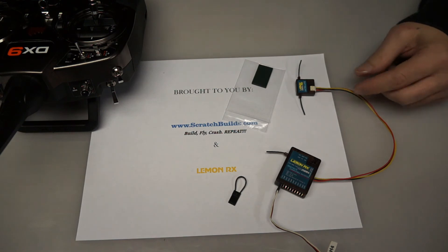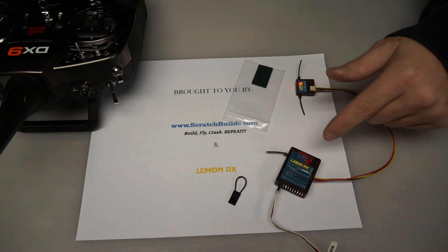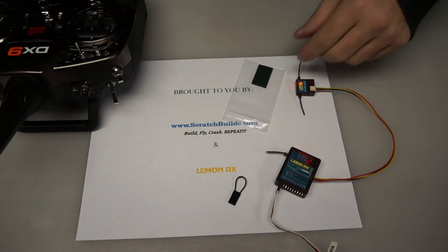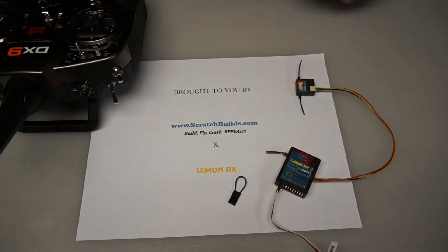What we should get this time is a solid LED, both the receiver and the satellite. And there we have it. So that's it. Remember to visit scratchbuilds.com for all your Lemon RX receiver needs. And you guys always fly safe and have a happy new year. Thanks for your time.